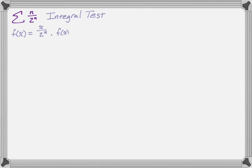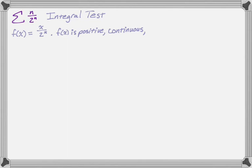f(x) is definitely continuous — you can see that for positive values, two to the x is never equal to zero, so this function always exists. It's also positive because x is always positive and two to the x is always positive, so the ratio is always positive. I also need it to be decreasing, which is kind of an issue because I can't just assert that without justification. It's definitely decreasing eventually, but I'm going to show the work just in case.